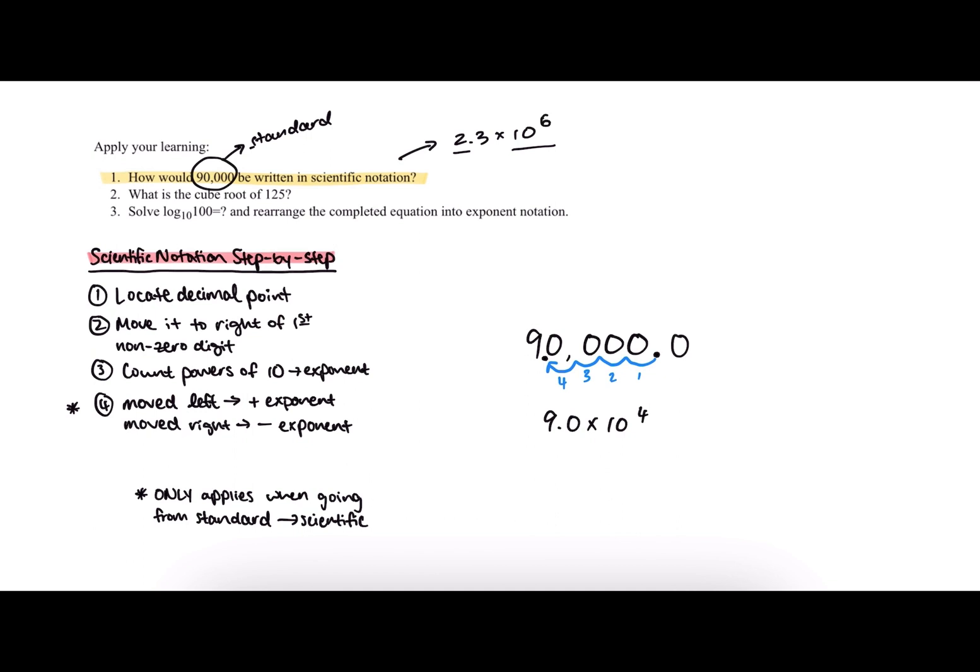So in our case, since we moved our decimal point over to the left, we'll stick with our positive exponent of four to give us 9 times 10 to the fourth. And that's equivalent to 90,000.